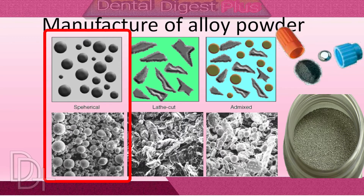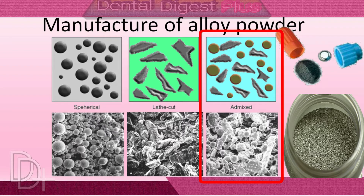The second method used to produce dental amalgam particles is to spray molten metal into a chamber of inert gas. The droplets solidify and produce spherical alloys. Some products are a mixture of both lath-cut and spherical particles; these products are called admixed or blended alloys.